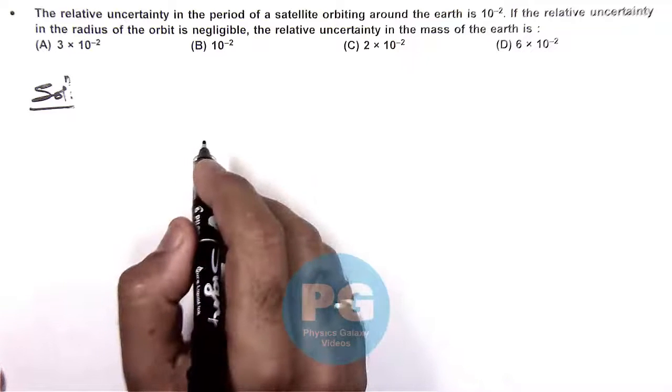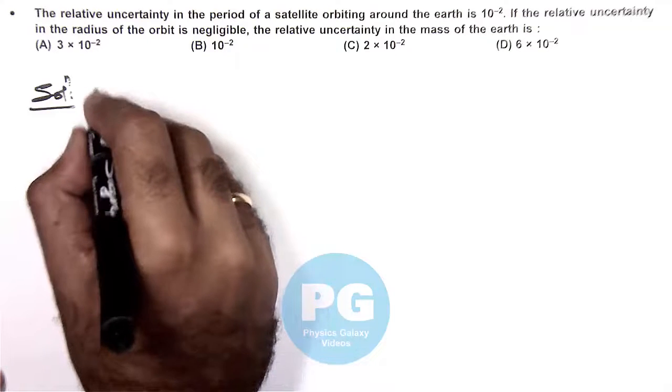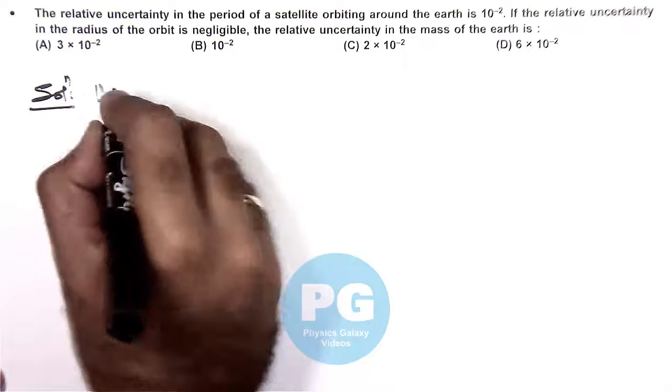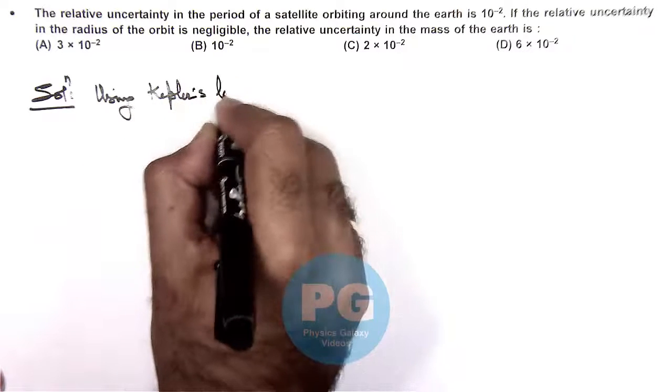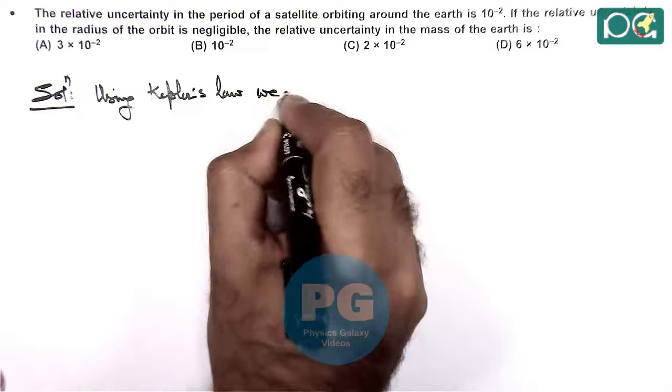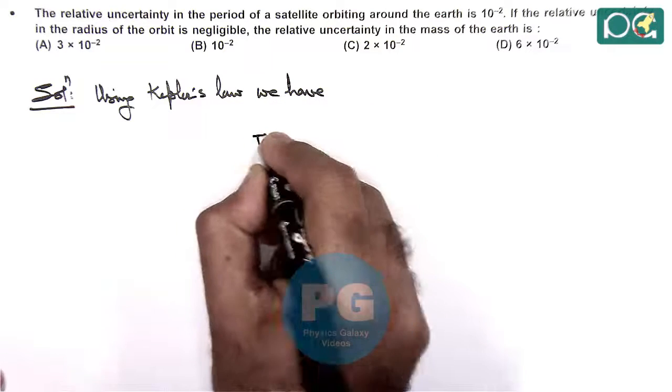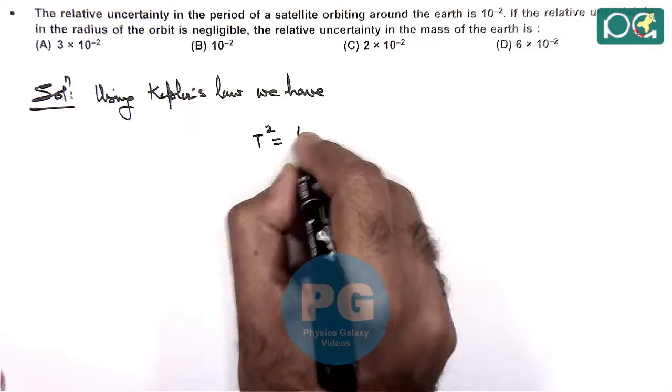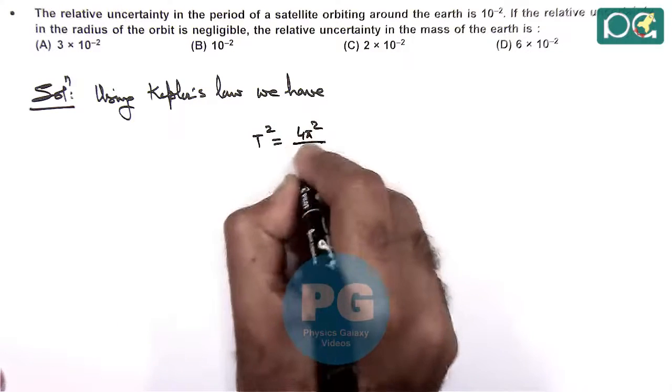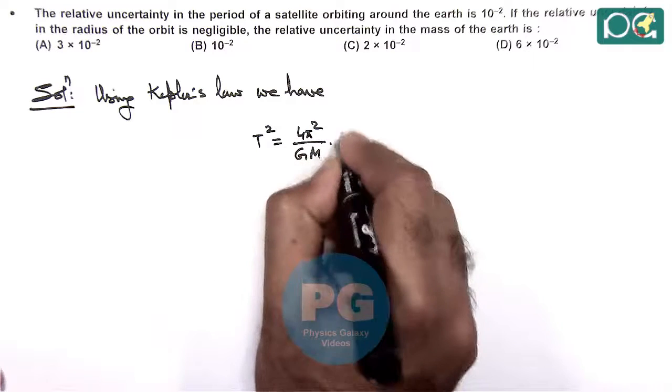Here we can relate the period, radius and mass by using Kepler's law. So we can write, using Kepler's law we have T square is equal to 4 pi square by GM, times R cube.